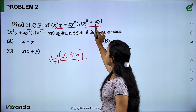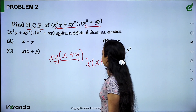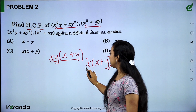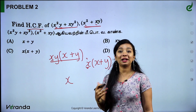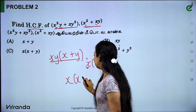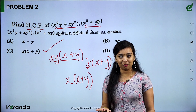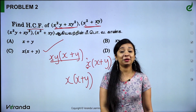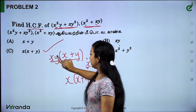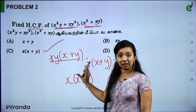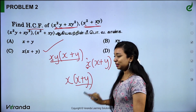For x squared plus xy: x is the common term, so factoring gives x times (x plus y). Comparing the two polynomials, x is common to both terms. The common factor between the two polynomials is x plus y. So the answer is x plus y. The shortcut: first find the common element, then identify which other alphabet or number is common — that gives the HCF answer.